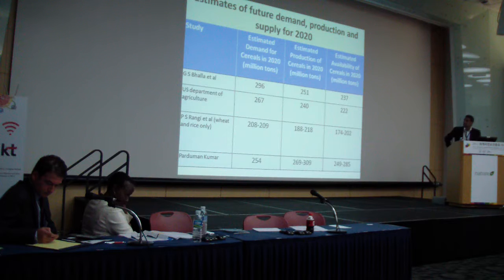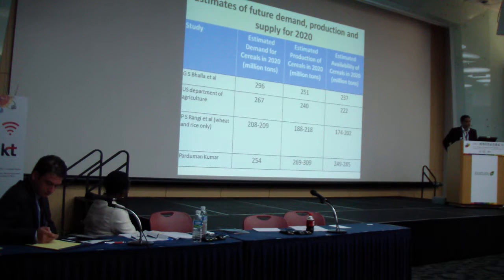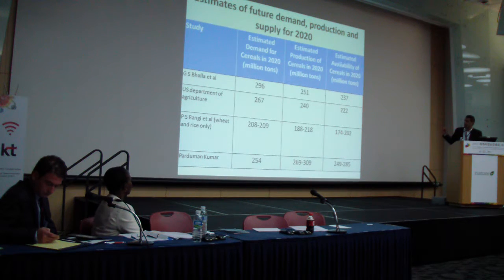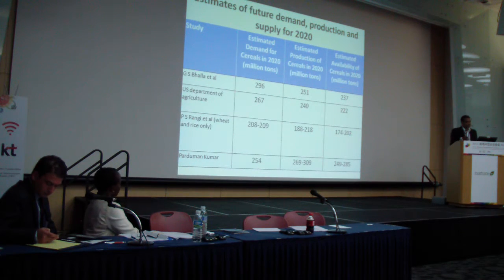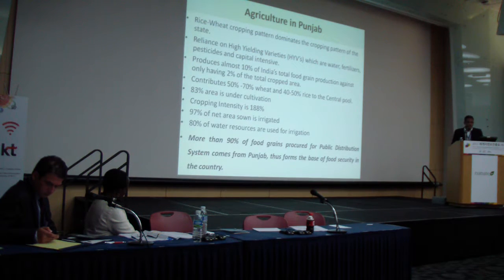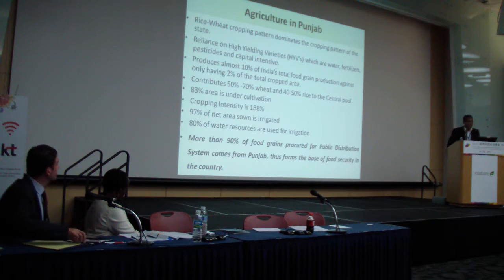Many studies estimate the demand, production, and availability scenario for 2020, indicating that India would be stressed in terms of production and availability — not necessarily in terms of demand, but because a lot of food produced in India is lost. It gets spoiled due to insufficient storage space. At a recent estimate, 10% of total food gets wasted and spoiled.